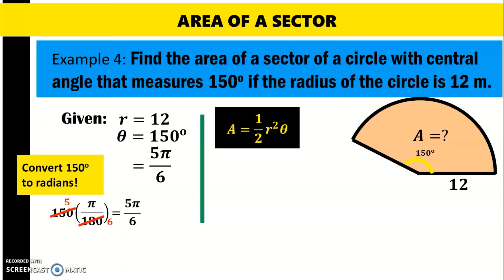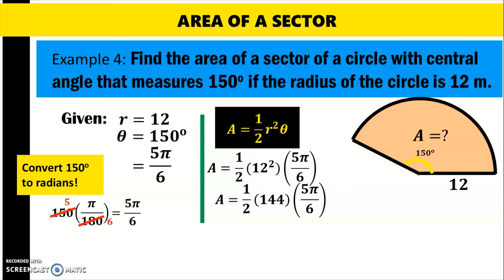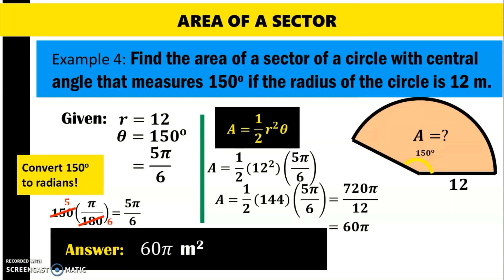Using the formula for the area of the sector, we replace r with 12 and theta with 5 pi over 6. And 12 squared is 144. So we have area equals one-half times 144 times 5 pi over 6. Multiplying 144 and 5 pi gives 720 pi, and the denominator is 2 times 6, which is 12. Dividing 720 by 12 gives 60. So the area is 60 pi square meters, which is approximately 188.5 square centimeters, obtained by multiplying 60 by 3.14.